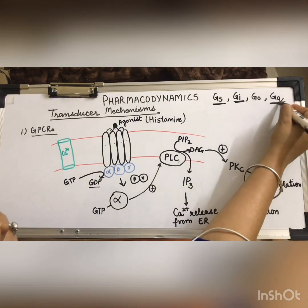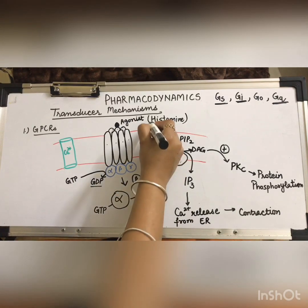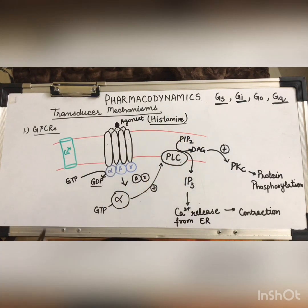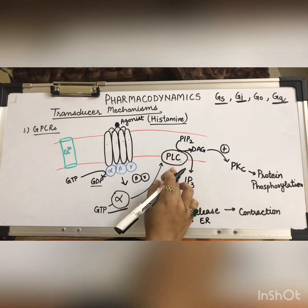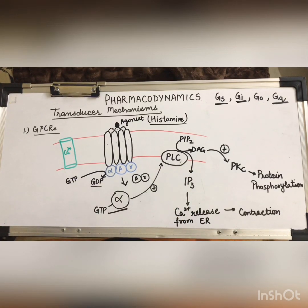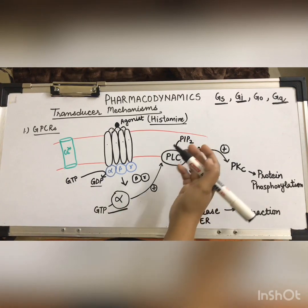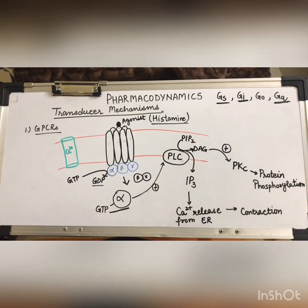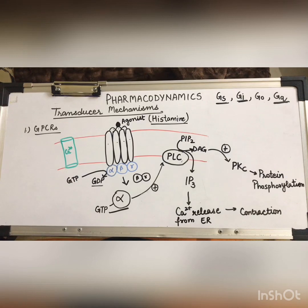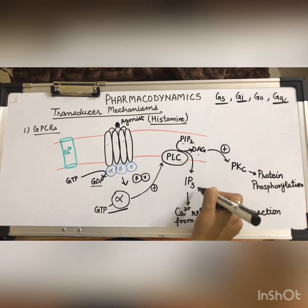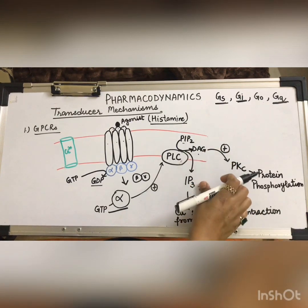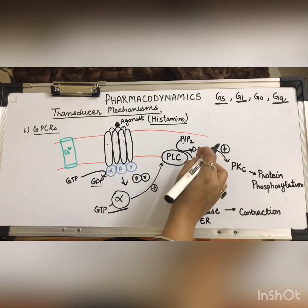The next pathway is the phospholipase C or IP3-DAG pathway, carried out by Gq proteins. In this case the agonist is histamine. When histamine binds to the GPCRs, the heterotrimeric unit is activated by GTP. The GTP-activated proteins dissociate, and the activated alpha subunit activates phospholipase C, which is the effector in this case.